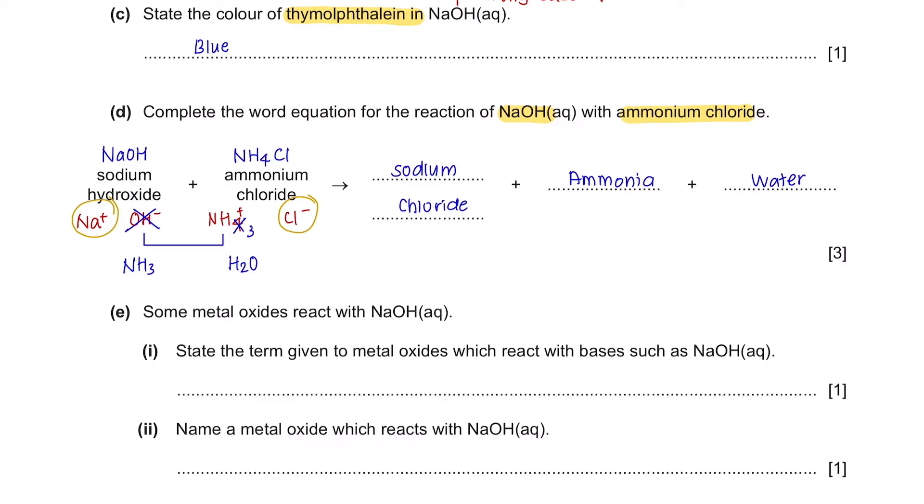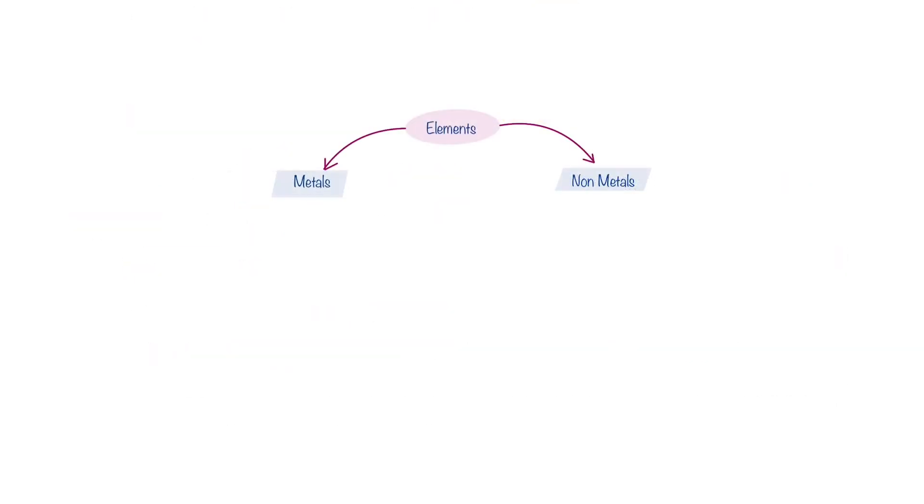Question E: Some metal oxides react with sodium hydroxide. Part 1: State the term given to metal oxides which react with bases such as sodium hydroxide. Elements can be classified as either metals or non-metals. And when they react with oxygen, there are four different types of oxide that will be formed.